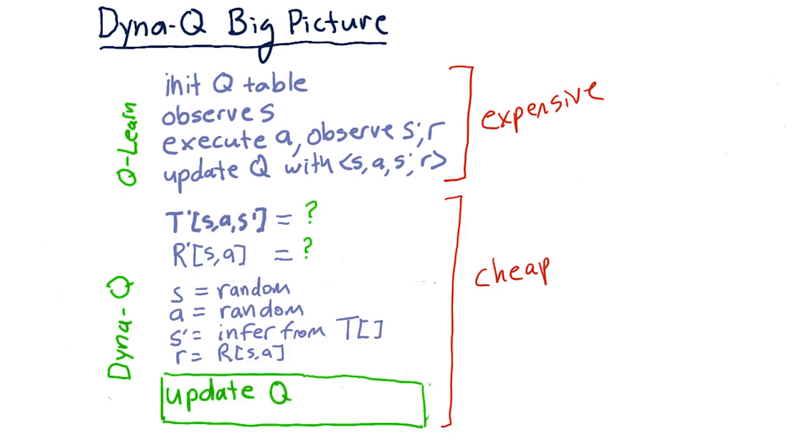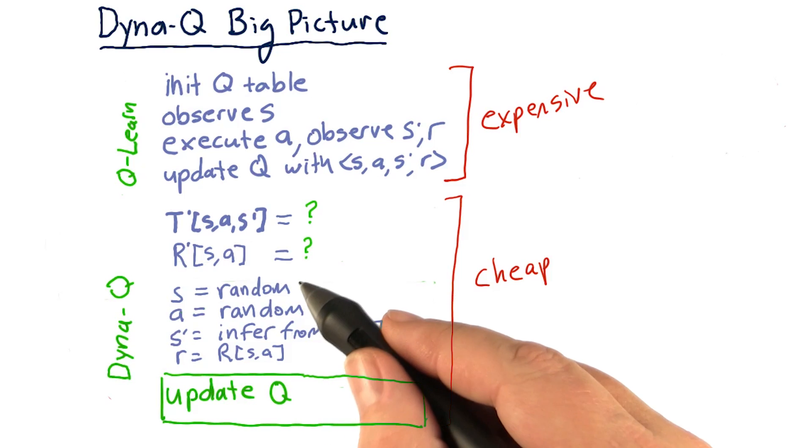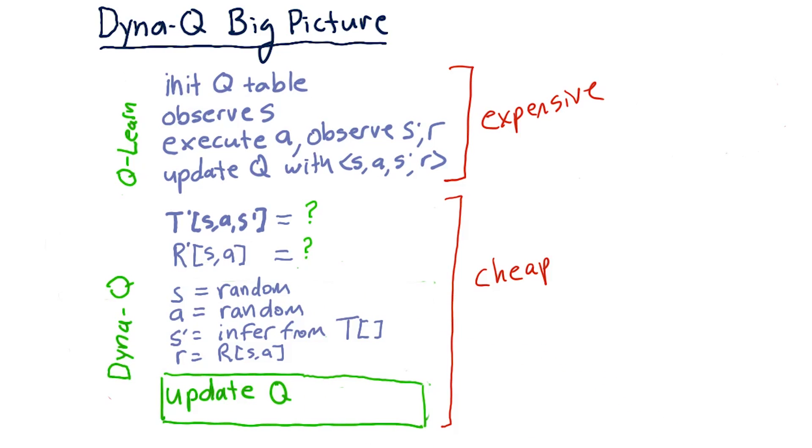Here's how we hallucinate an experience. First, we randomly select an S. Second, we randomly select an A. So our state and action are chosen totally at random.